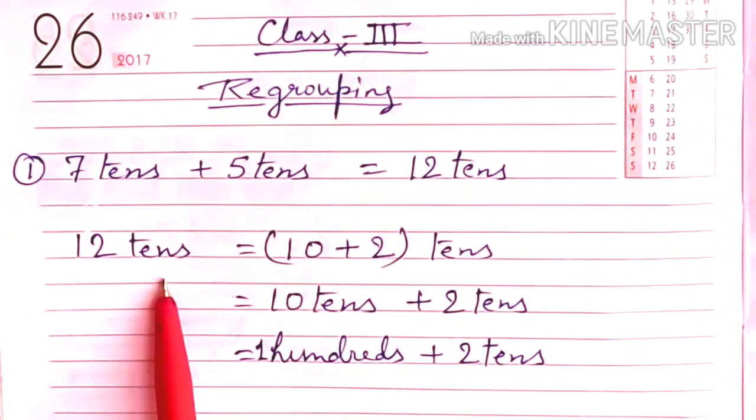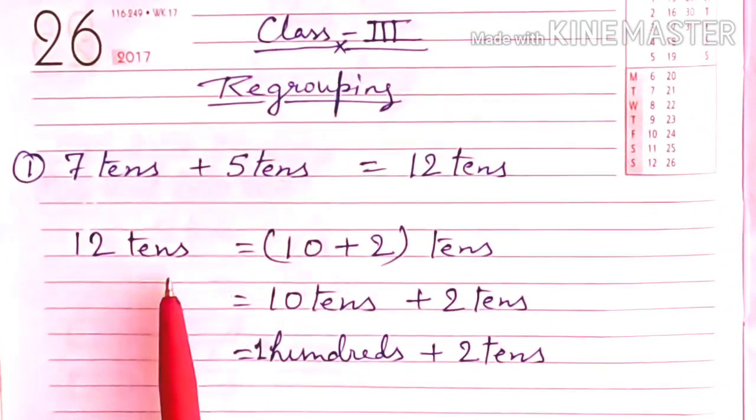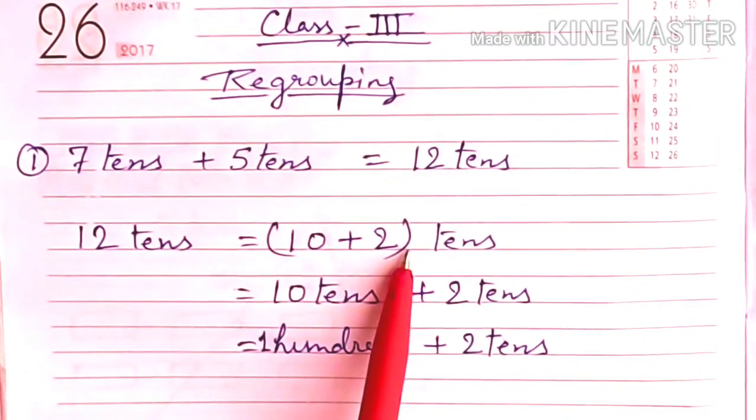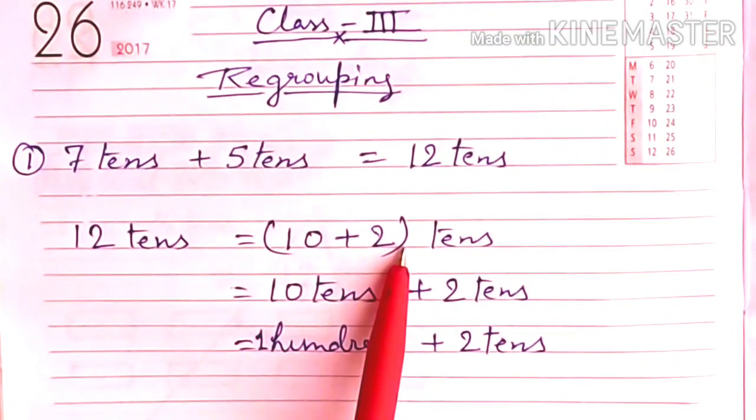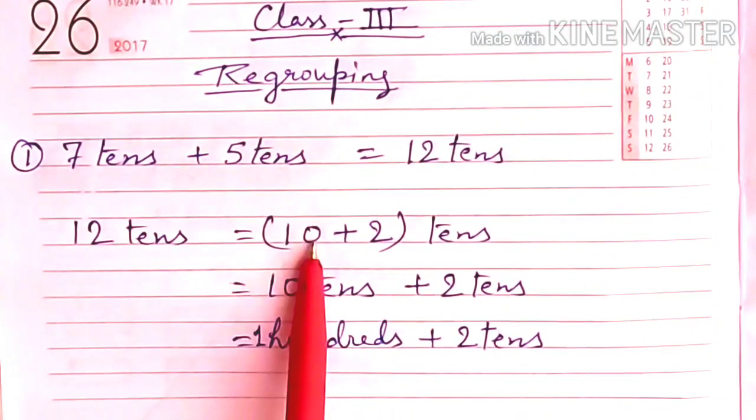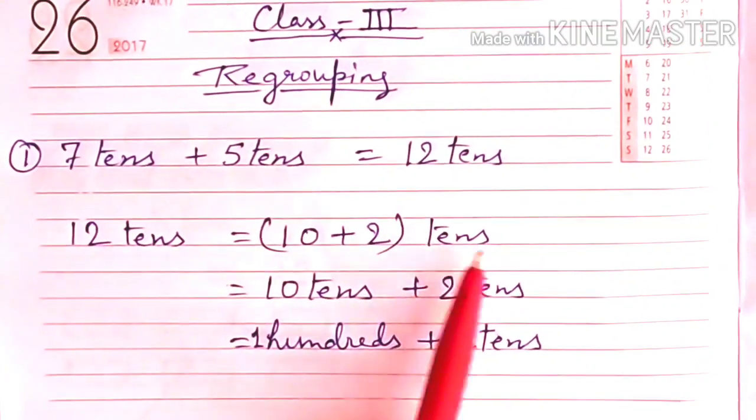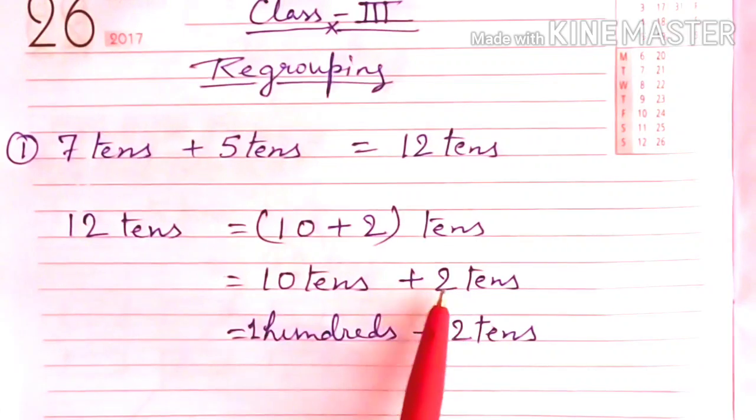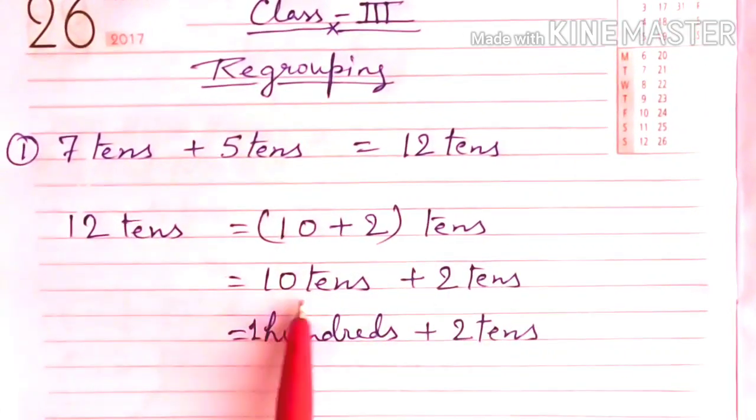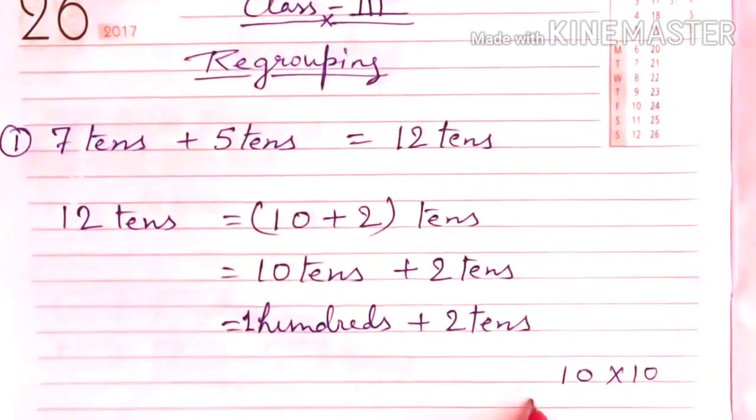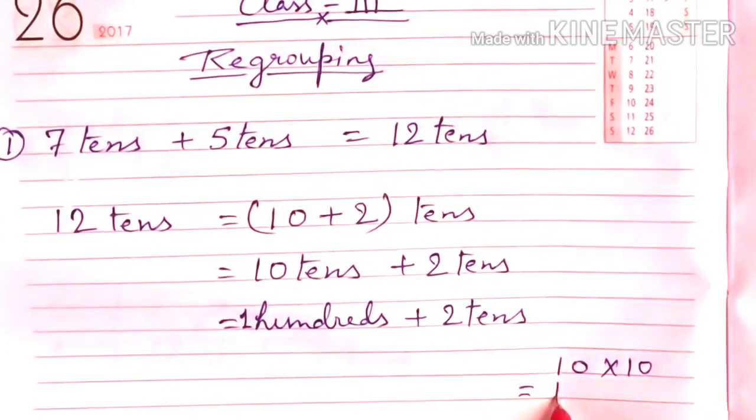Now we have to regroup 12 tens. 12 tens equal to what? 10 plus 2. When we regroup, we regroup in tens. So 10 tens, that means 10 plus 2 tens, 12 tens equal to 10 tens and plus 2 tens. 10 tens, 10 into 10 is equal to what? 100.